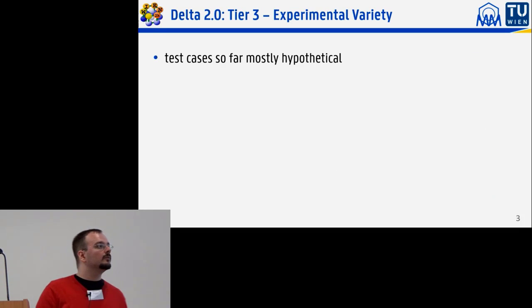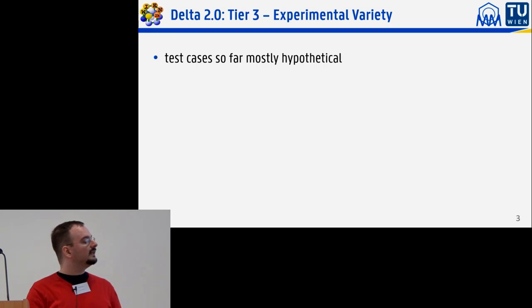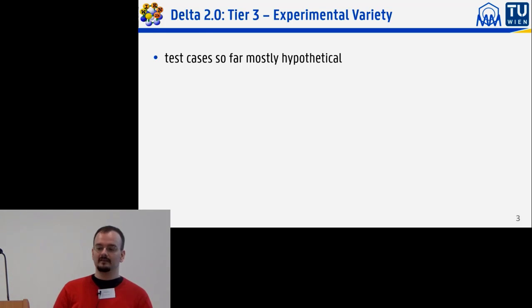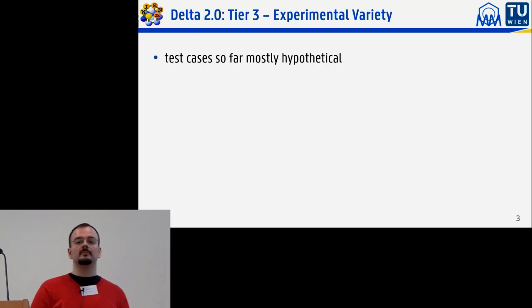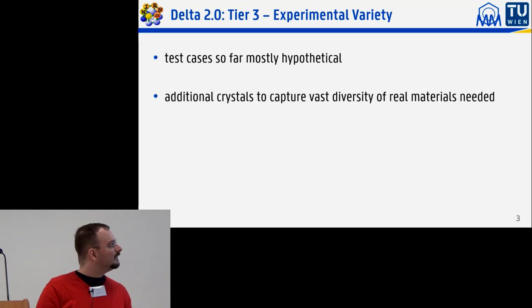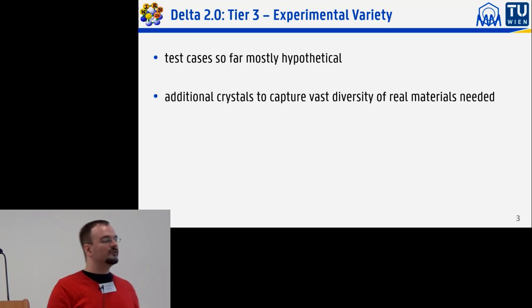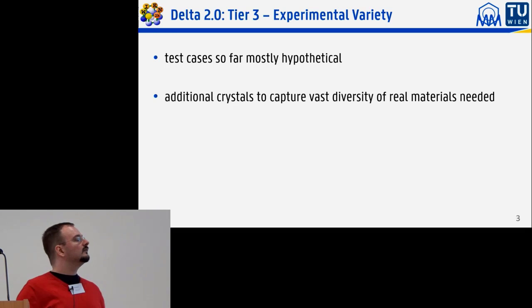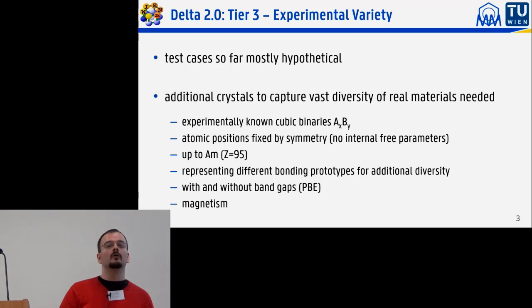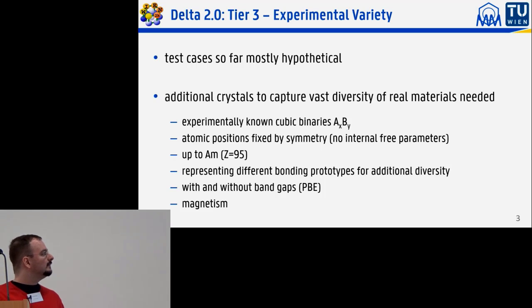The main reason we need those is that most of the test set members introduced and calculated so far are strictly hypothetical. A search of the database of 570 cases showed that only about 10% are known experimentally.